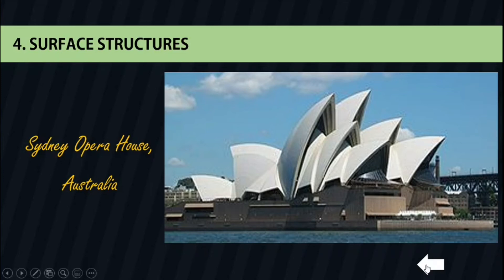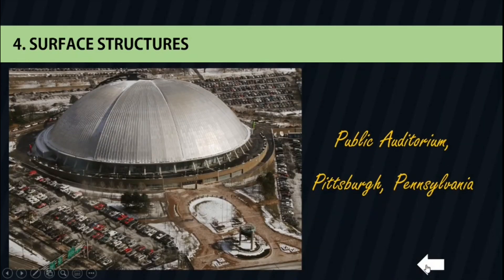Our second example is a public auditorium designed to serve both as a conventional hall and as an open-air amphitheater seating 13,600. The building has a retractable dome consisting of radial steel ribs sheeted in stainless steel. The dome has a diameter of 417 feet and a rise of 109 feet.